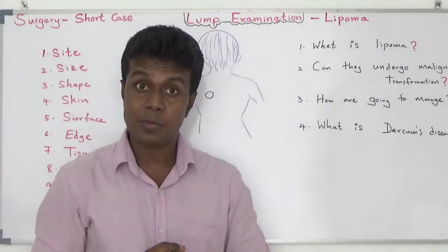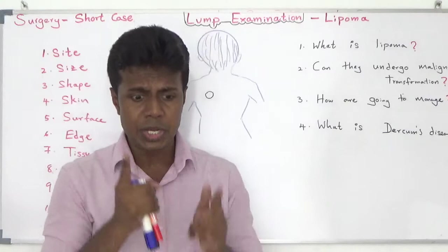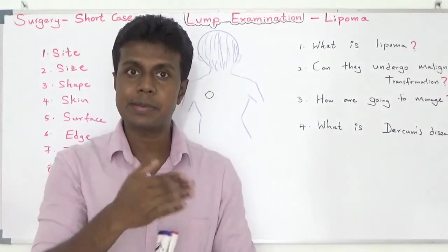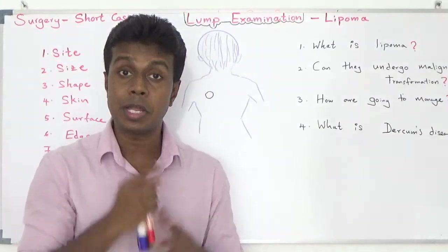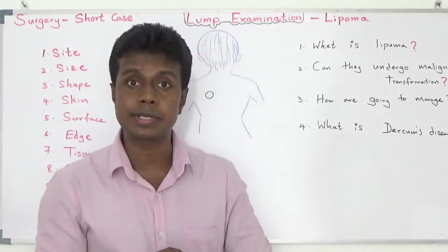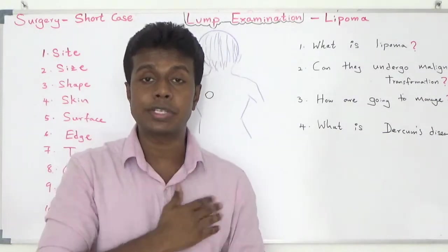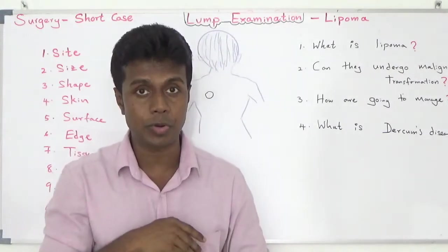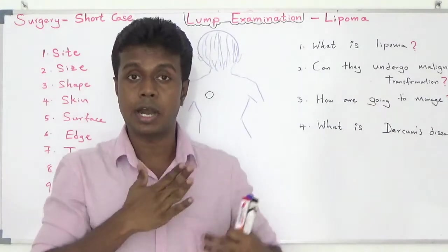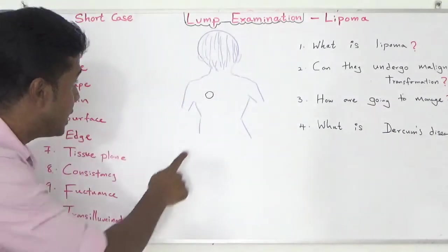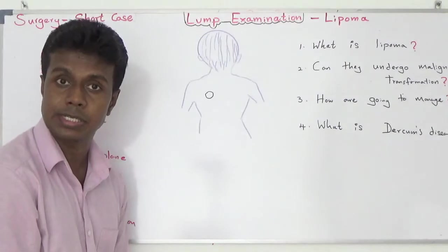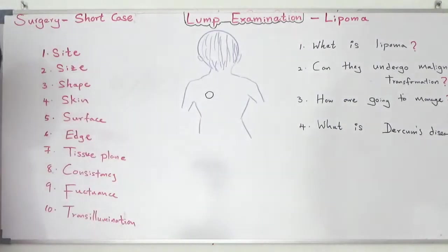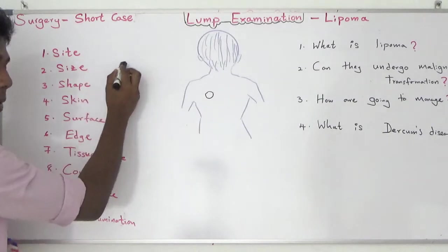Surgery Short Cases: Lipoma examination. In your exam, you may be asked to examine a lump. Lipoma most commonly presents on either the front side or back side of the chest. Lipoma can be anywhere in the body, but the most common site is either the front or back of the chest. Here, the lump is on the back side of the chest, over the left scapula.